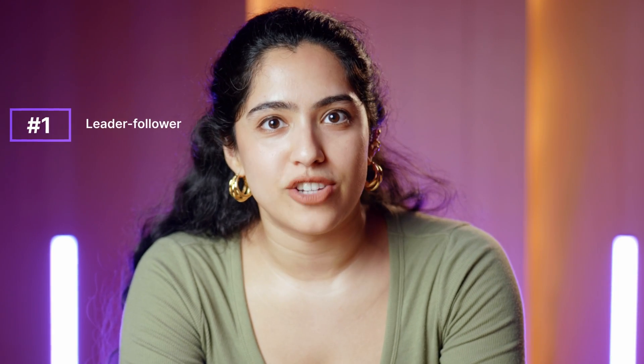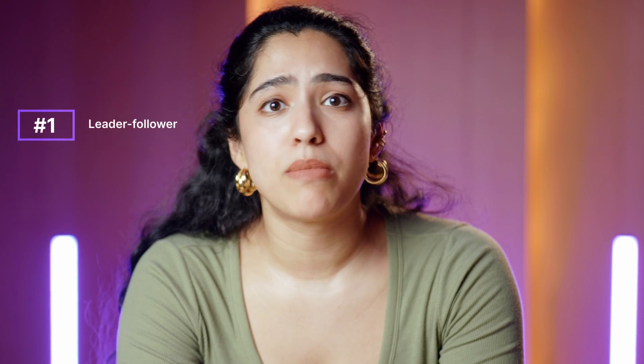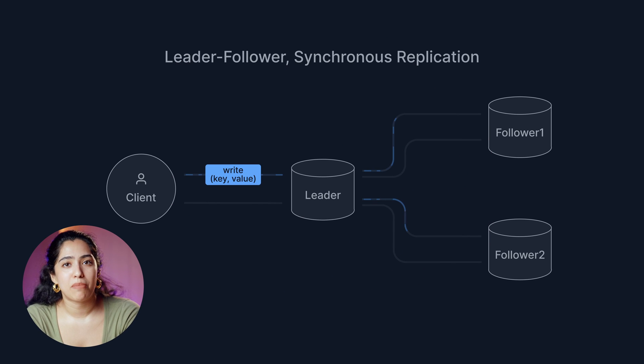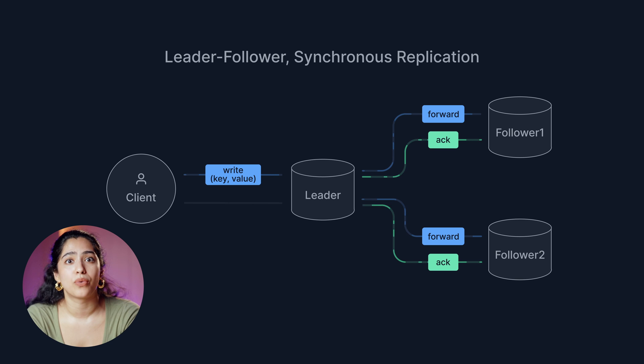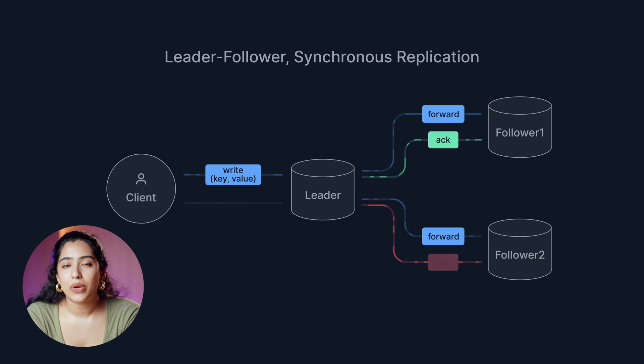First, there's the leader-follower strategy, also known as primary replica. This is probably the most common strategy, where a query writes to a single designated leader. The leader then replicates the updated data to followers. If this is done synchronously, it can be really slow. Synchronous replication requires that both the leader and followers must commit before the write is considered successful. This does ensure that follower data is up to date, but if a follower in the chain goes down, the write query will fail.